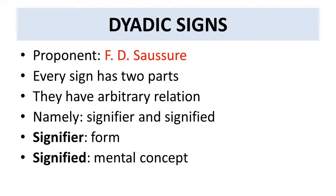The signifier and signified do not hold any one-to-one relationship with each other. There is no inherent reason why we call a tree a 'tree.' They have been used together for so many years that they have become a convention. This relationship is known as an arbitrary relationship. This is all for the dyadic model of signs.